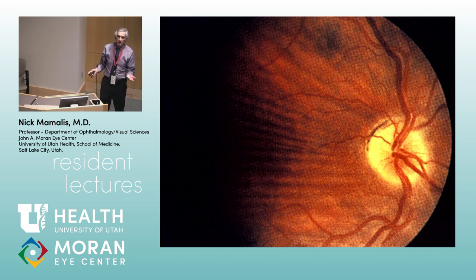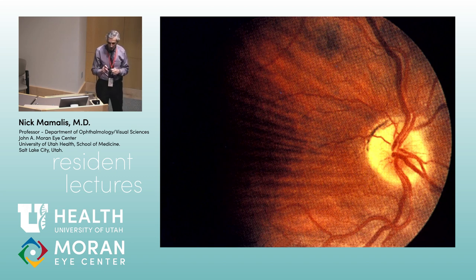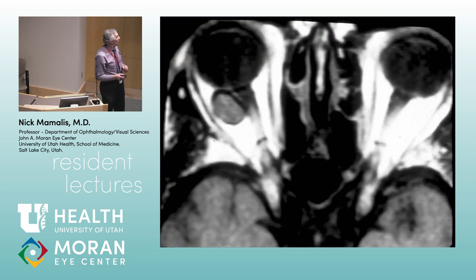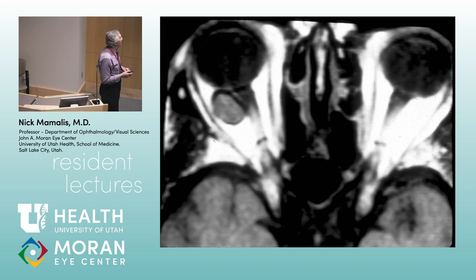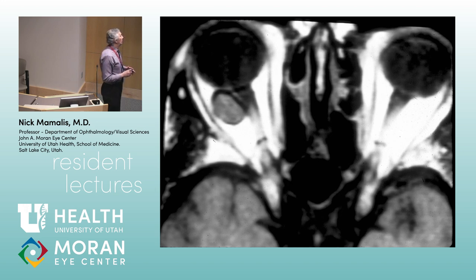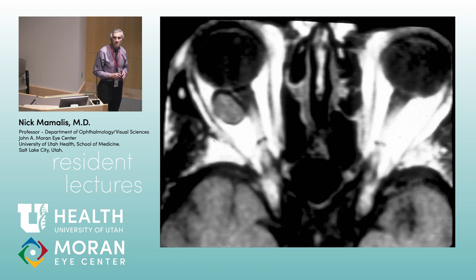When you start to see choroidal folds, you worry about an intraconal mass lesion. We talked about the optic nerve last week — if you see an intraconal lesion, you want to worry about gliomas, meningiomas, schwannomas. On the CT, Tina, what do we see? There's an intraconal lesion on the right side, relatively well-circumscribed, no outpouchings. This is a 28-year-old with vague symptoms of maybe pain around the eye and episodes where the vision washes out periodically.